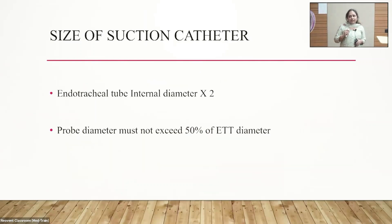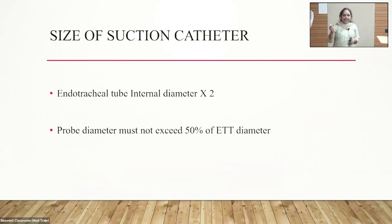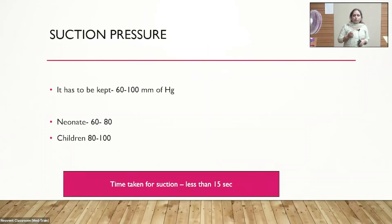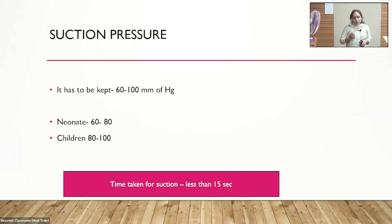The size of the suction catheter is decided based on the ET tube size. For a size 3 ET tube, we can use a size 5 or 6 suction catheter; the probe diameter must not exceed 50% of the ET tube diameter. Suction pressure should be capped between 60 to 100 mmHg — typically 60 to 80 in neonates and 80 to 100 in children. Time taken for suctioning should not be more than 15 seconds.